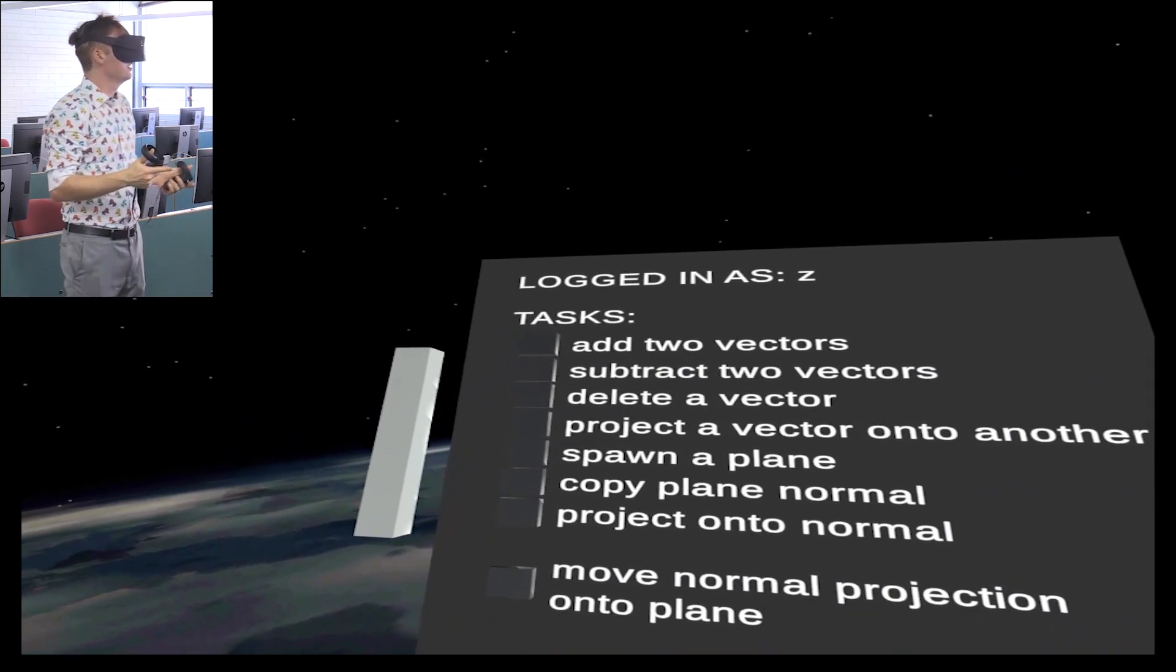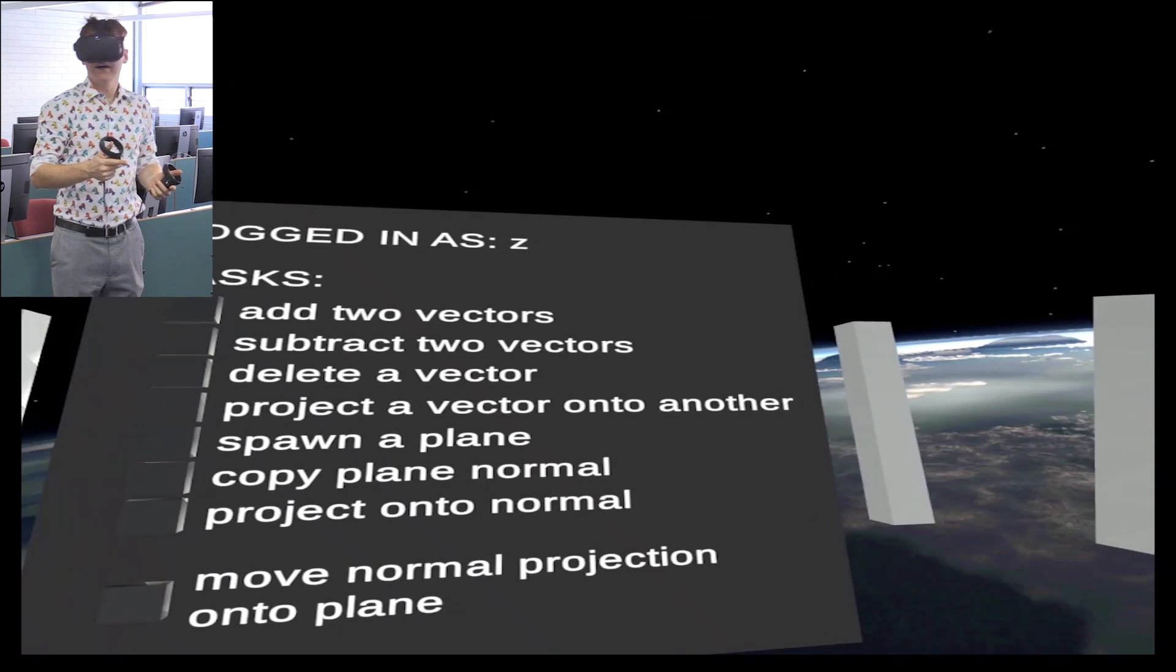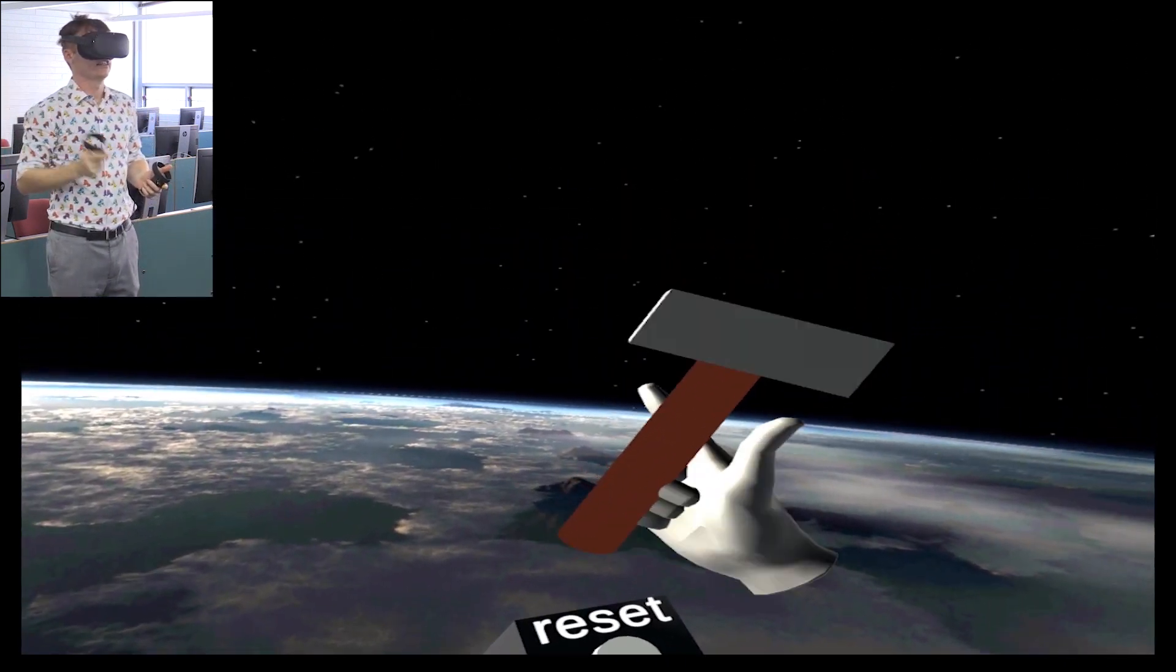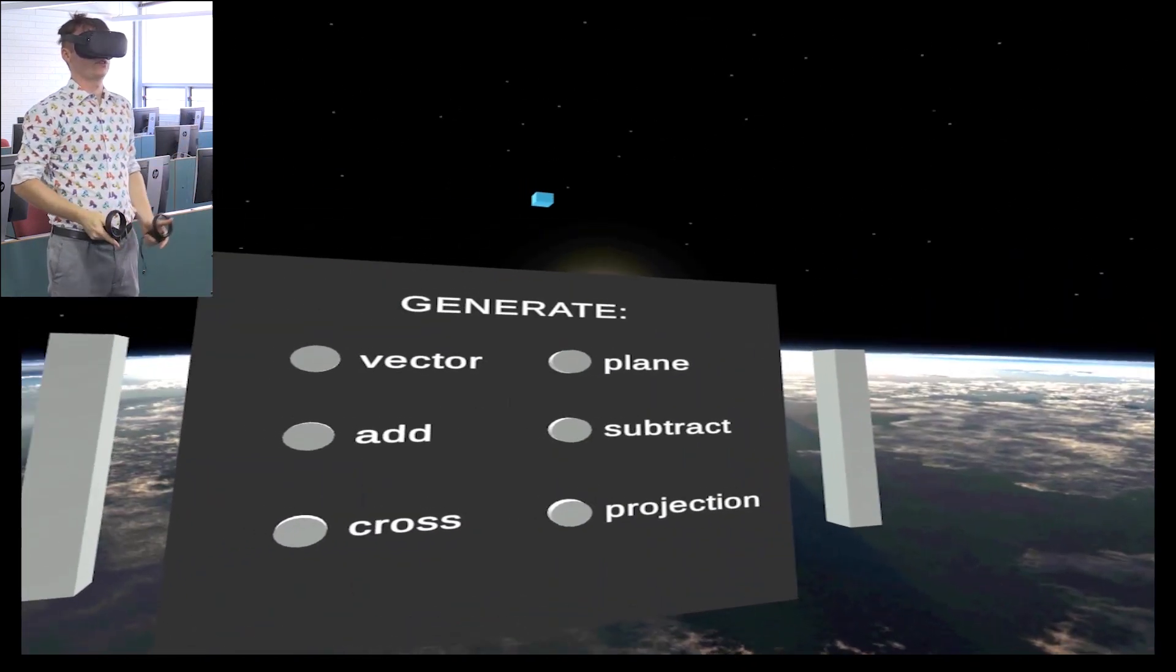Add two vectors. That's right. And over here I've got a reset button and a hammer. Alright. Let's try some stuff.